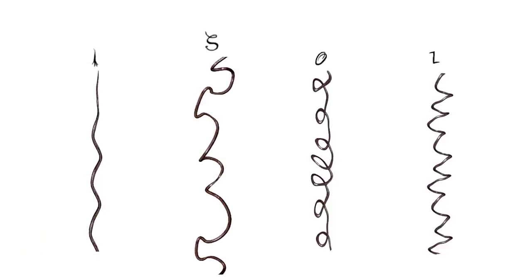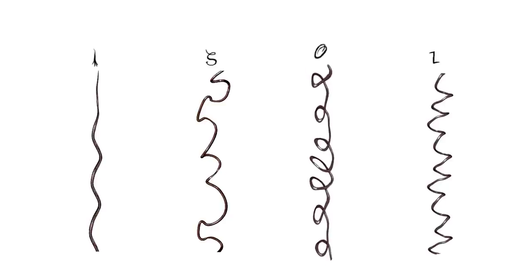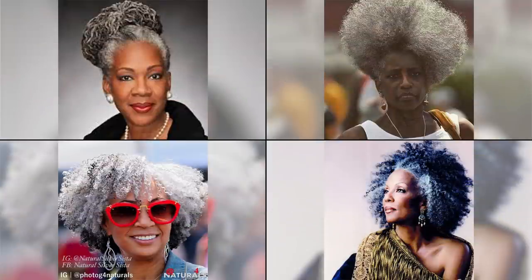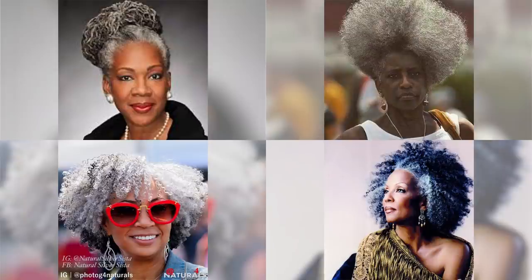When determining what your curl pattern is, focus on the most predominant one or two. I also purposely did not mention anything about aging as a culprit of dense hair becoming sparse, because there is no correlation with aging and excessively or noticeably sparse hair. Of course, you should expect some hair thinning and scalp dryness with aging, but not to the point where it's very noticeable or dramatic. How you care for your mind and body when you're young dictates how well or poorly you age.